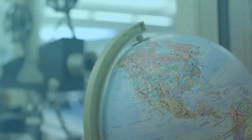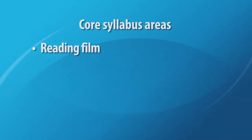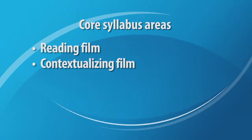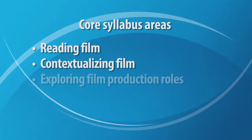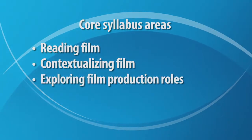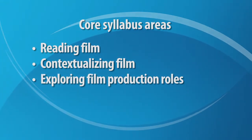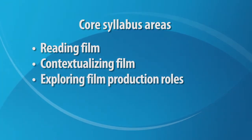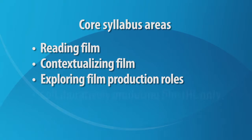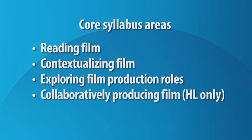The core film syllabus consists of the following areas: reading film, contextualising film, and exploring film production roles. In addition, higher level students explore the area of collaboratively producing film.